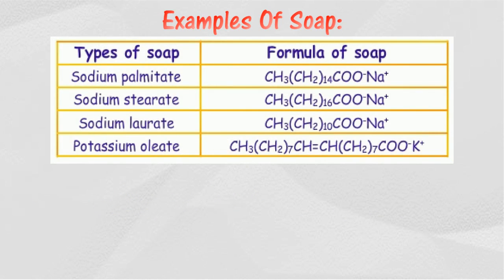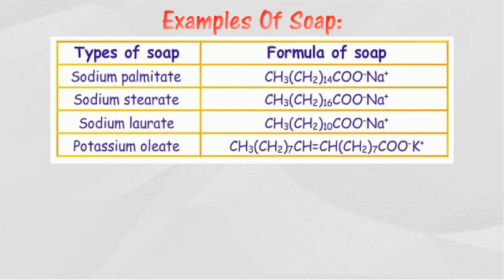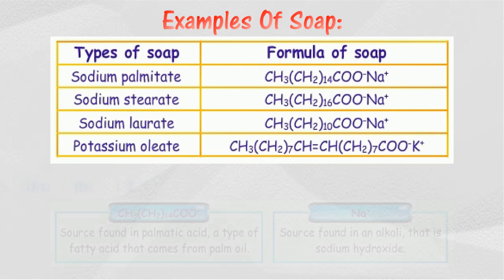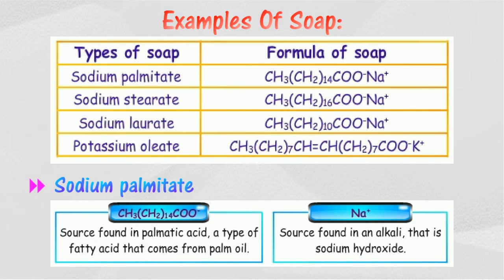Examples of soap include Sodium Palmitate, Sodium Stearate, Sodium Laurate, and Sodium Oleate. For example, Sodium Palmitate soap is a sodium salt of palmitic acid that is derived from palm oil — a type of fatty acid that comes from palm oil — and an alkali, that is sodium hydroxide.